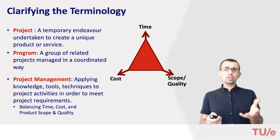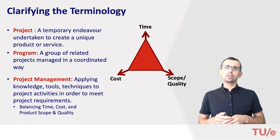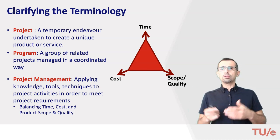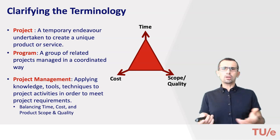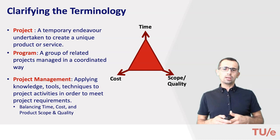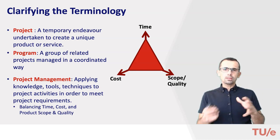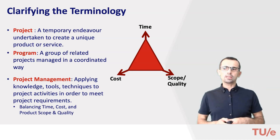In real projects we usually fix one or two of these dimensions — you usually have a strict budget or a deadline, and then you negotiate the scope, and hopefully not the quality. That's how you manage a project in that sense.